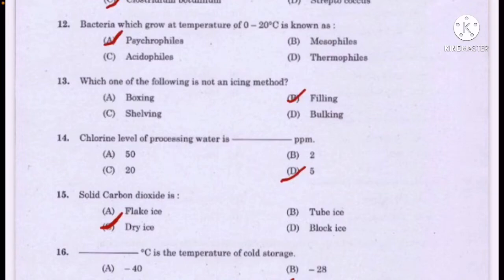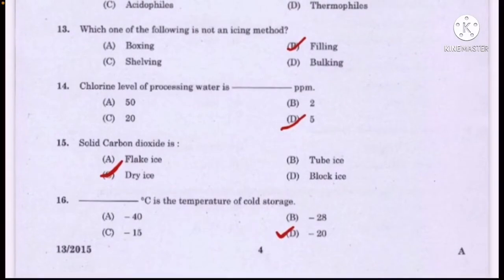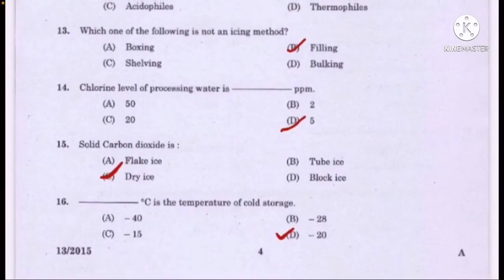Chlorine level of processing water is dash ppm — correct answer option D: 5. Solid carbon dioxide is — correct answer option C: dry ice. Dash degree Celsius is the temperature of cold storage — correct answer option D: minus 20 degrees Celsius.